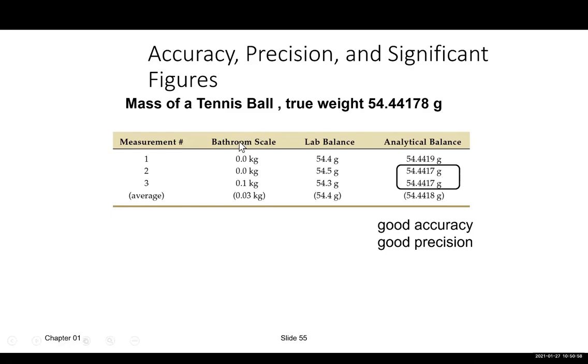If I use three different tools of measurement, one is a bathroom scale, another one which is more accurate than a bathroom scale, like a triple beam balance, and the third balance, which is analytical balance, very accurate. In case number one, I'm doing one measurement. Bathroom scale says this tennis ball is zero grams or zero kilograms. The lab balance says 54.4 grams. The analytical balance says 54.4419.